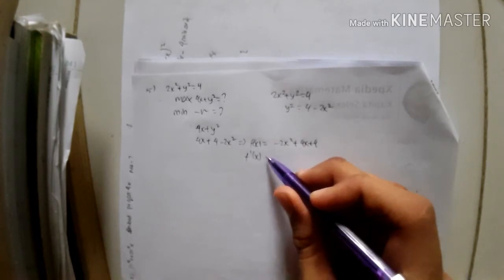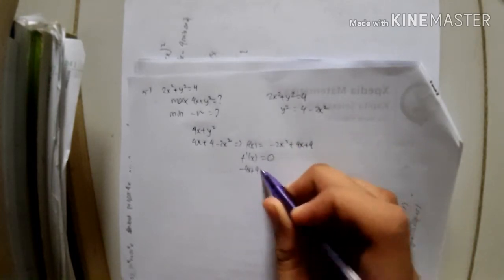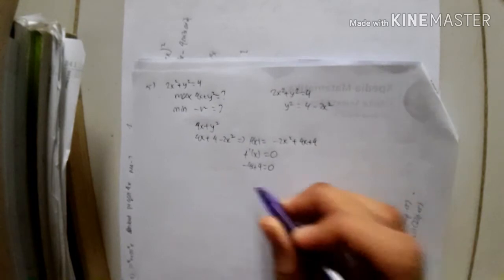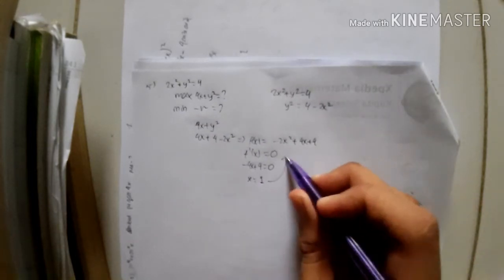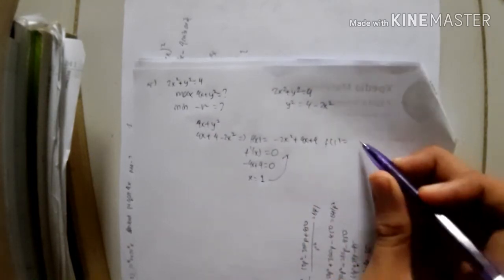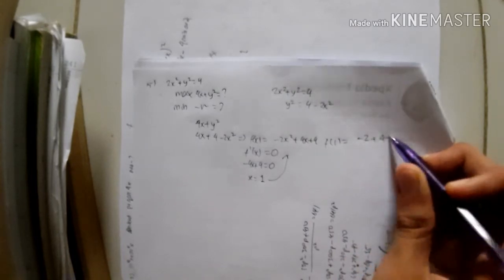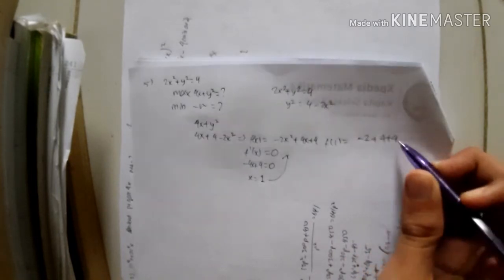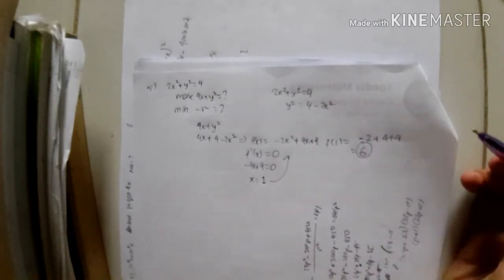Setting the derivative equal to zero gives x = 1. Substituting back: -2(1)² + 4(1) + 4 = -2 + 4 + 4 = 6. This is the maximum value of the function.